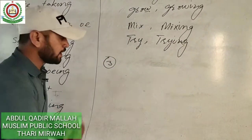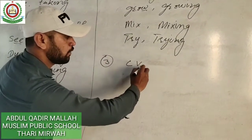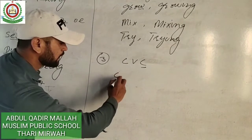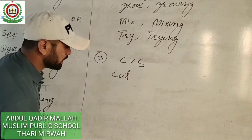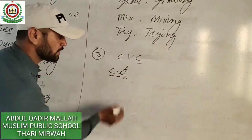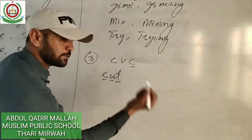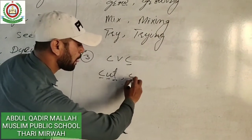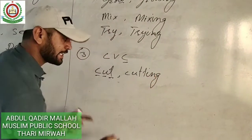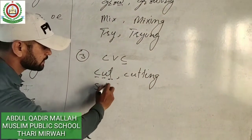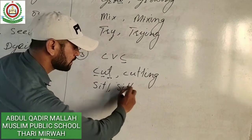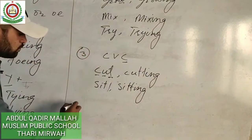Point number three: if a word has a single syllable and ends with a consonant-vowel-consonant pattern, we double the last consonant and then add -ing. For example, 'cut' — consonant, vowel, consonant — we double the last consonant to get 'cutt,' then add -ing: 'cutting.' Similarly, 'sit' becomes 'sitting.'